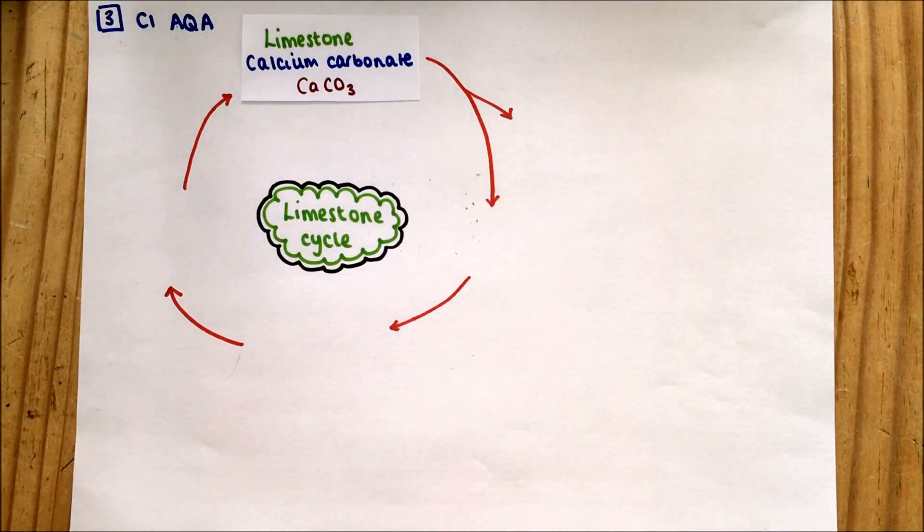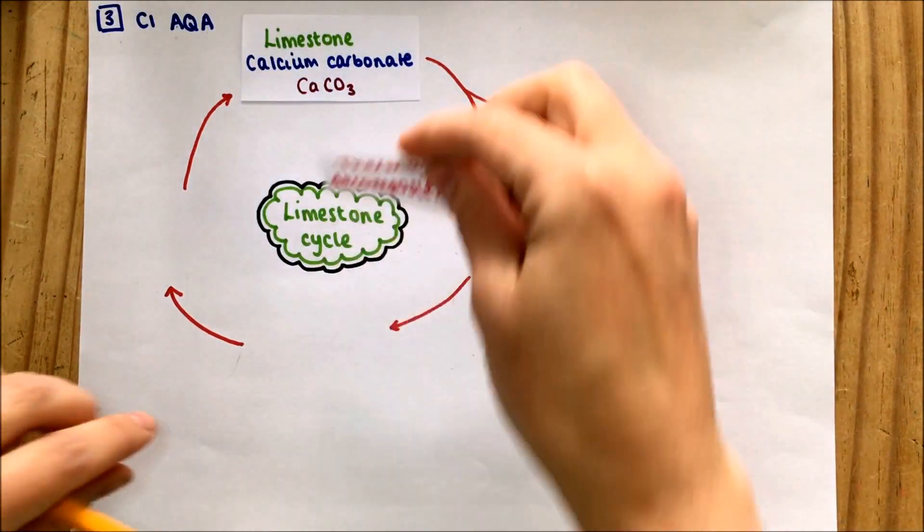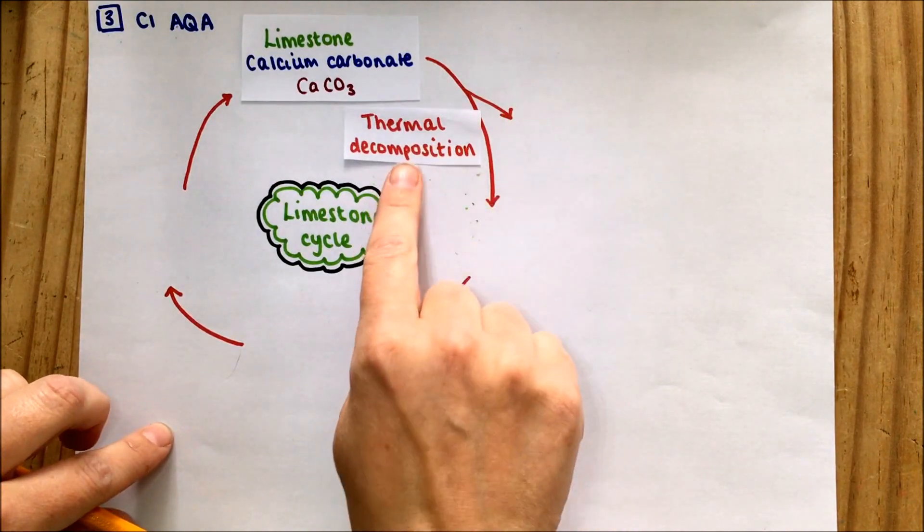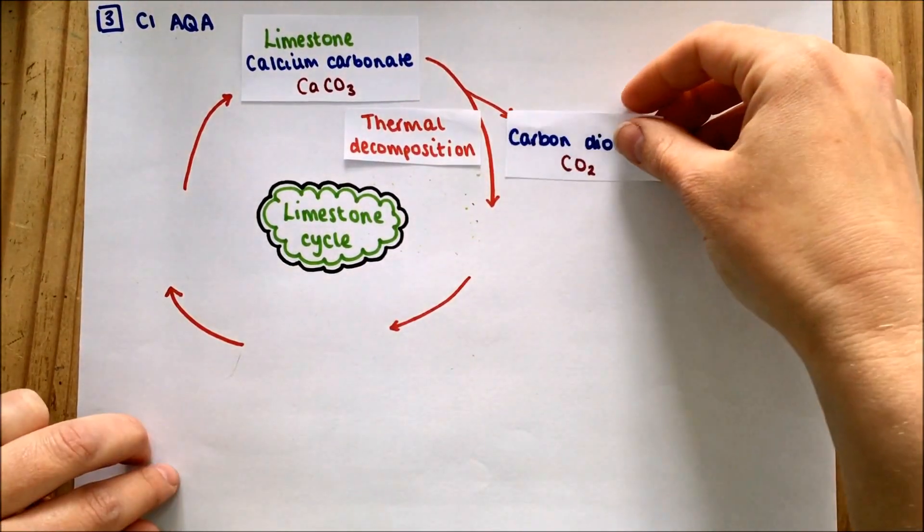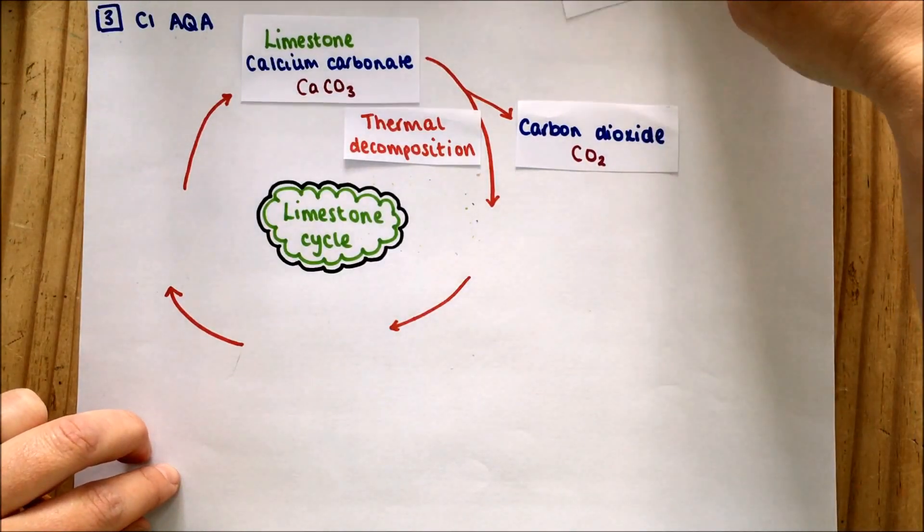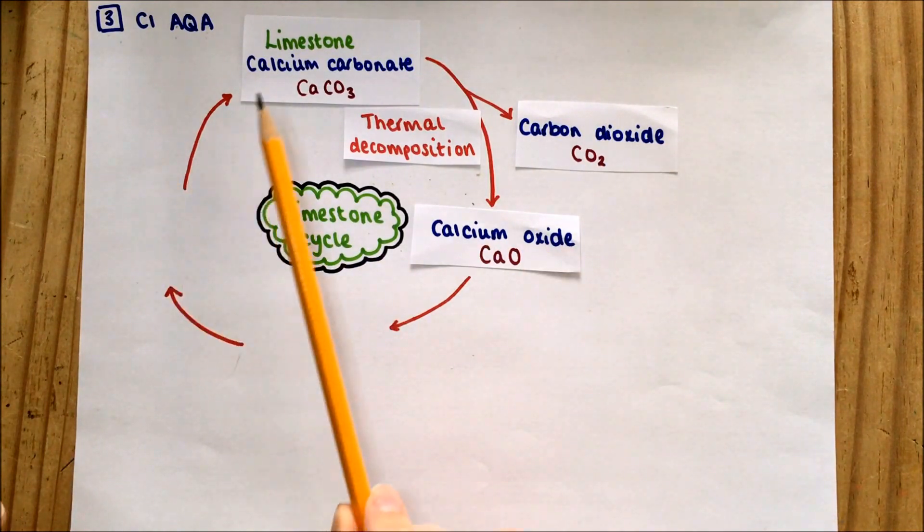We can break this down using heat. If we break something down using heat, the process is called thermal decomposition, and we turn it into two products: carbon dioxide and calcium oxide.